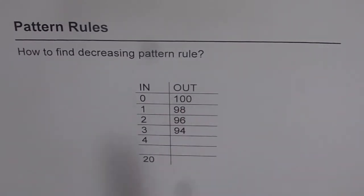Now we are given input output data. Input is 0, 1, 2, 3, 4 and goes up to 20 let us say. And the output is 100, 98, 96, 94 and so on. Now we need to describe this input output pattern.